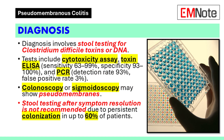Diagnosis: Diagnosis of Clostridium difficile infection typically involves stool testing for the presence of toxins or the bacteria's DNA. Tests include cytotoxicity assay, toxin enzyme-linked immunosorbent assay (ELISA), and polymerase chain reaction (PCR). Toxin ELISA has a sensitivity of 63 to 99% and specificity of 93 to 100%. PCR can detect Clostridium difficile about 93% of the time with a false positive rate of about 3%.